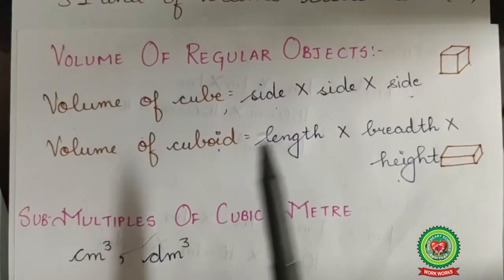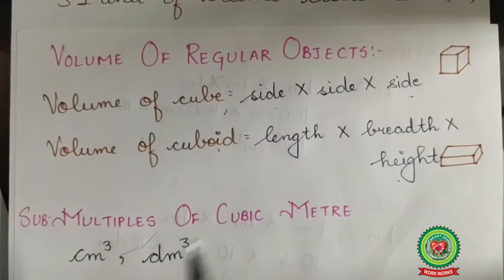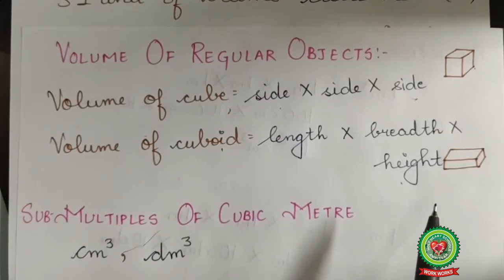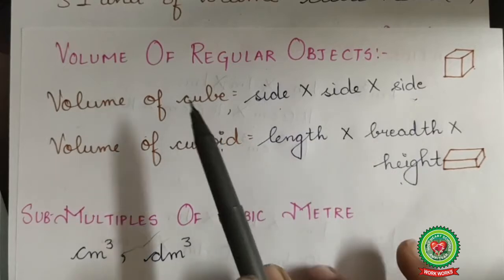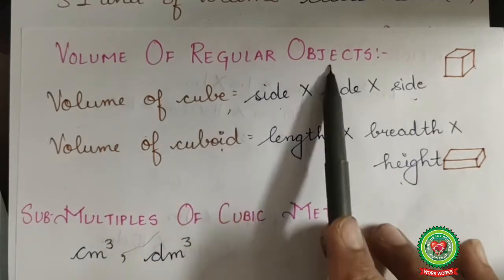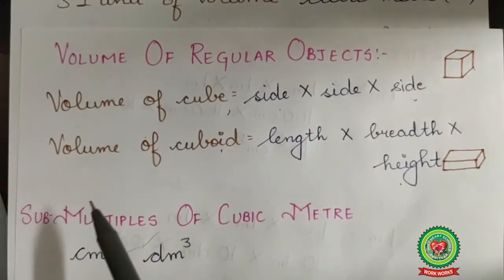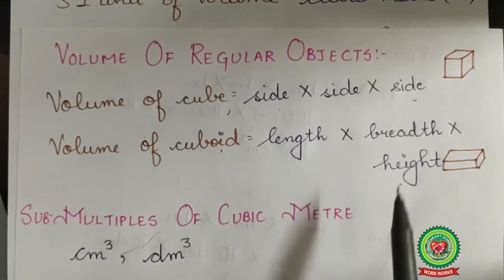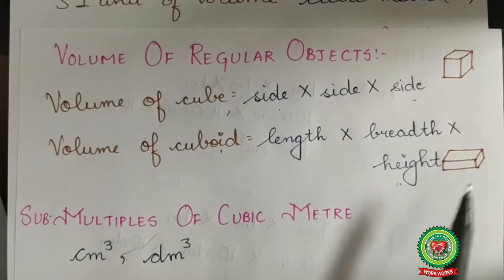Volume of regular objects: for measuring the volume of regular objects we have formulas. First, volume of a cube is side × side × side. A cube is an object whose all sides are equal. Volume of a cuboid is length × breadth × height. A cuboid is an object whose sides are different from each other.